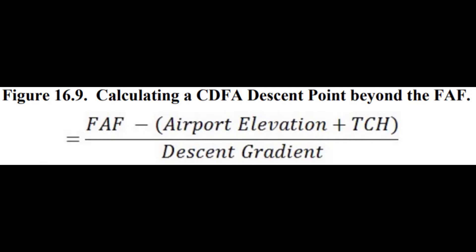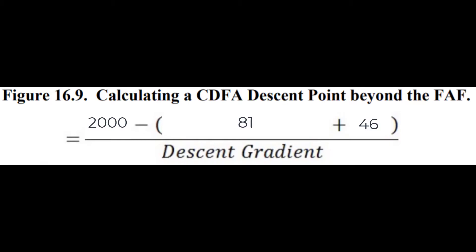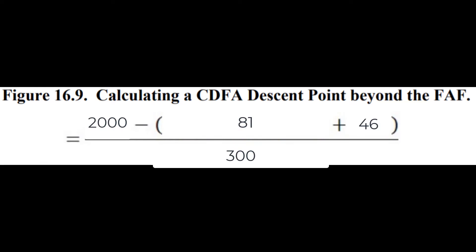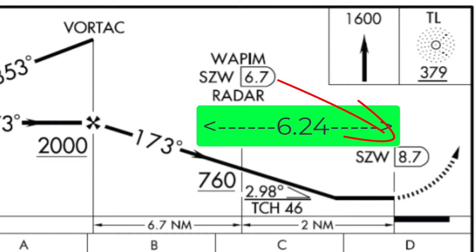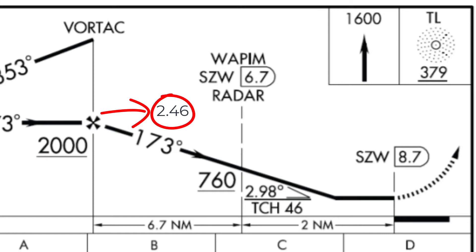In this case, the final approach fixed altitude is 2,000 feet. The airport elevation is 81 feet above sea level and the threshold crossing height is 46 feet. A descent gradient of 2.98 degrees can be approximated to about 300 feet per nautical mile. Running the numbers gives you a calculation of 6.24 nautical miles — meaning 6.24 miles from the end of the runway to start your descent on a 3-degree glide slope will get you 46 feet above the ground. As you can see, the DME is counting up, so we must subtract 6.24 from 8.7 to give us the DME at which we should begin our descent. After running the numbers again, we find out that if we start our descent at 2.46 DME, we can have one single constant descent final approach from 2,000 feet MSL down to the runway without any pitch and power changes to accommodate for obstacles.